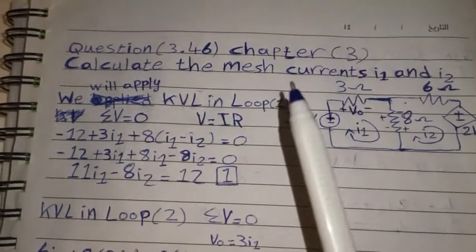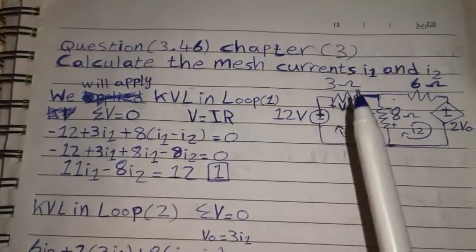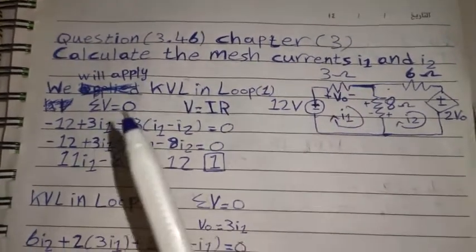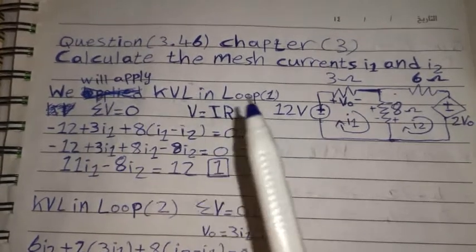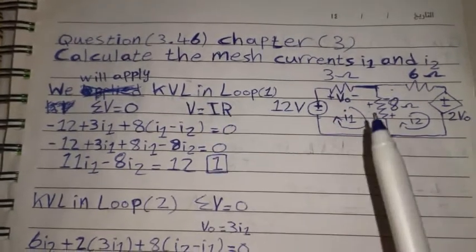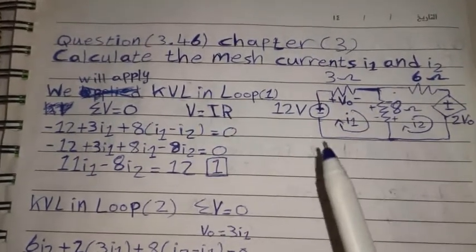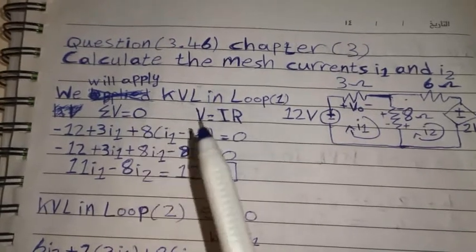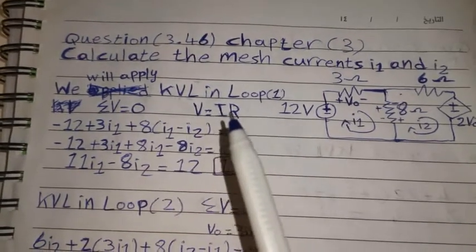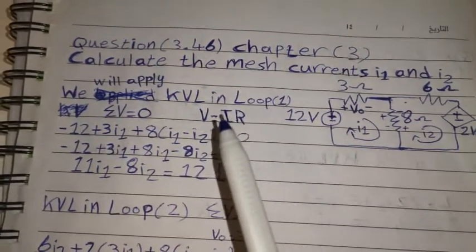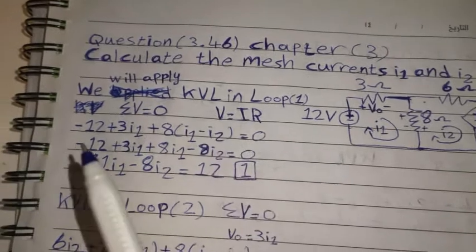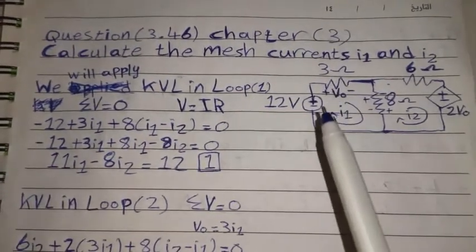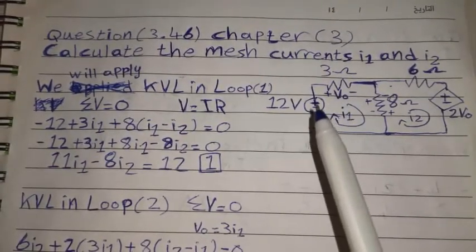We will calculate the mesh currents I1 and I2 in this circuit. First, we will apply KVL in loop 1. We will assume I1 will go clockwise. Sigma V will equal zero, and V will equal I multiplied with R — this is Ohm's law. We will say minus 12 because the current will go from negative to positive in this voltage source.